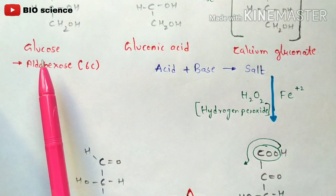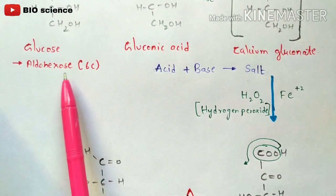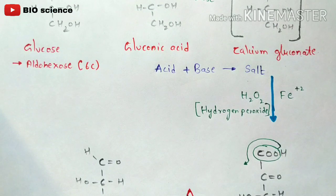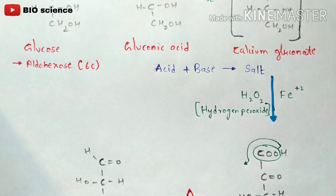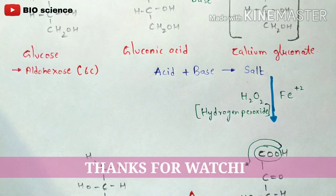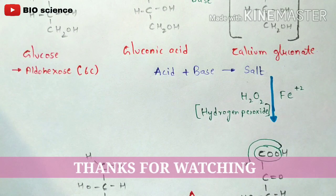The conversion is now complete — the aldohexose has been converted to aldopentose. This is the process behind the interconversion of D-glucose to D-arabinose by Ruff's Degradation. If you like the explanation, subscribe to my channel and press the bell icon for latest updates. If you have any doubts regarding this topic, please comment in the comment box and we will clarify your doubts immediately. Thank you.